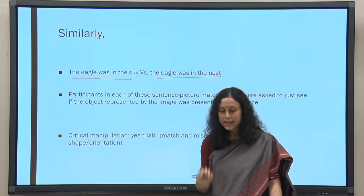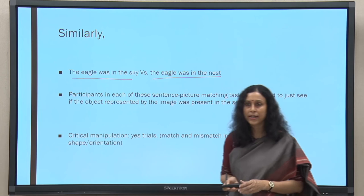Language mediates simulation — by simply changing one part of the sentence we can simulate an entirely different scenario. The fact that we do simulate is reflected in these findings. The critical manipulations were yes-trials where match and mismatch were in terms of shape and orientation. Many other studies in the same line found the same kind of answer — it is a sequential trial where the prime sentence precedes the target image.